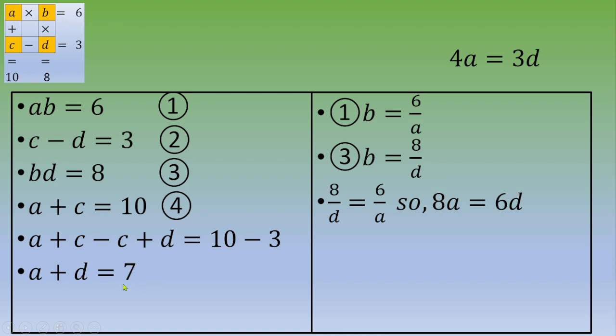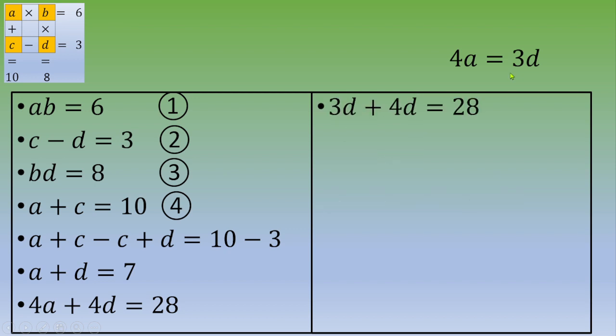Back in this equation, A plus D equals 7. You want to get 4A, so you multiply by 4 on both sides. You got 4A plus 4D equals 28. You know the value of 4A, this is 3D, so you plug 3D. In this equation, you got 3D plus 4D equals 28.